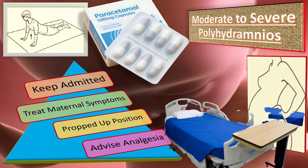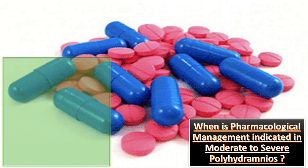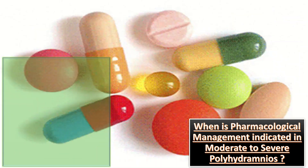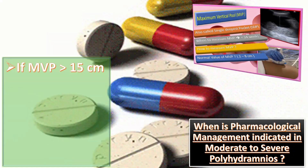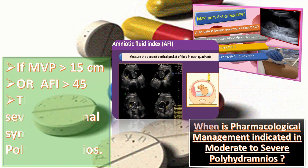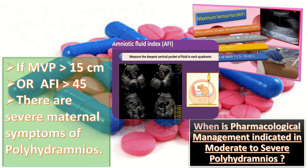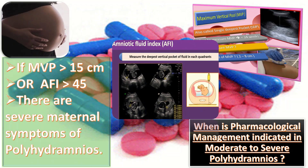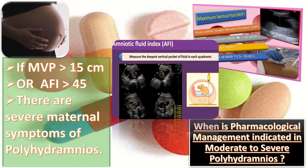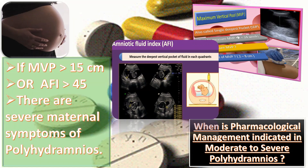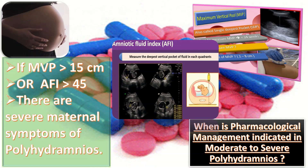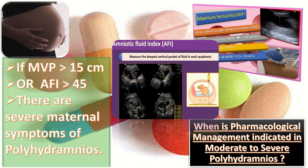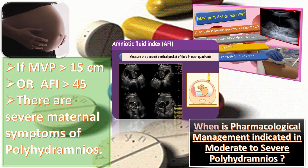When is pharmacological management indicated in moderate to severe polyhydramnios? It is indicated when the maximum vertical pool is more than 15 cm, or the amniotic fluid index is more than 45, or there are severe maternal symptoms of polyhydramnios. In all these three cases, we advise pharmacological management if required and if there are no contraindications. How to calculate the maximum vertical pool and amniotic fluid index is explained in the diagnosis video linked in the top right corner.